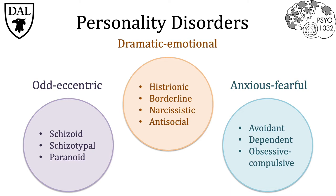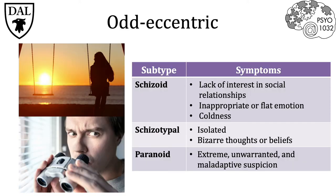We'll look at personality disorders, of which there are three distinct clusters: odd/eccentric, dramatic/emotional, and anxious/fearful. The first cluster is odd/eccentric, of which there are three subtypes. The first is schizoid personality disorder — someone who does not want close relationships, is emotionally aloof, reclusive, and often humorless. This is an individual who really wants to live a solitary life.